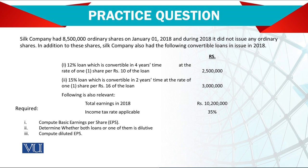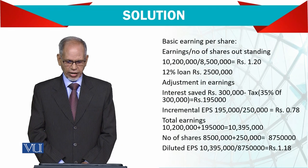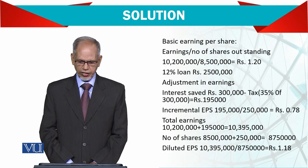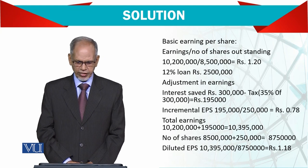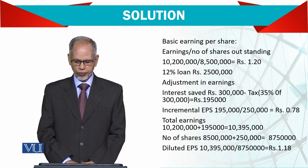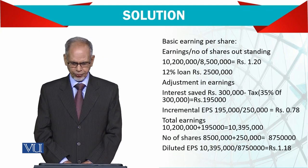The following is also relevant: the 2018 earnings are 10.2 million and the applicable income tax rate is 35%. Now let's compute the basic earning per share. It is simple — earnings divided by number of shares outstanding: 10.2 million divided by 8.5 million, which gives 1.2.